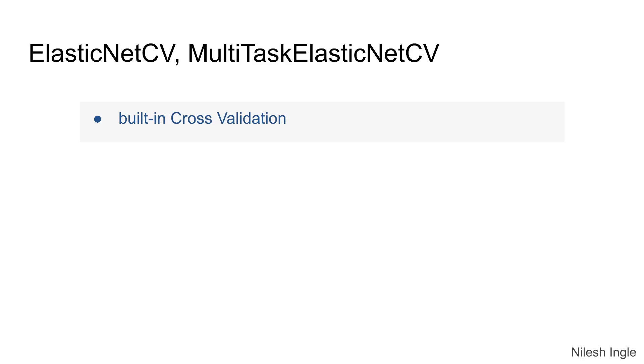Now both ElasticNet and MultiTask ElasticNet have a cross-validation function built in. So these are the two functions: ElasticNetCV and MultitaskElasticNetCV. So we'll look at the implementation of both of these in coding in the next video.